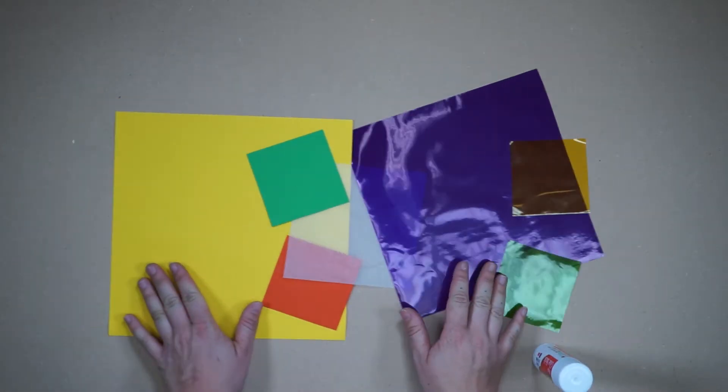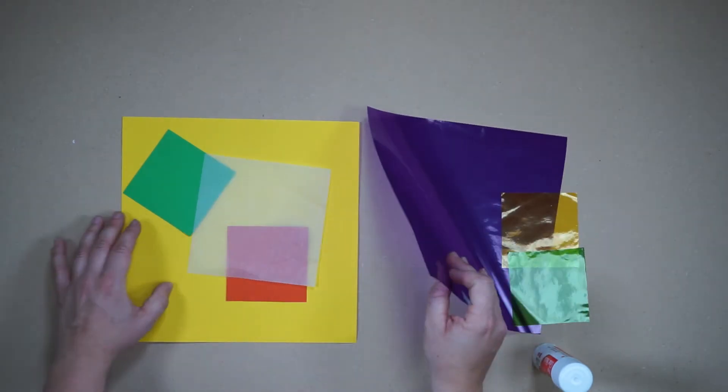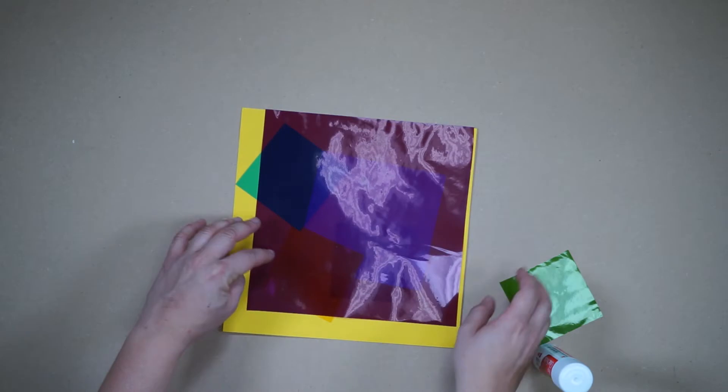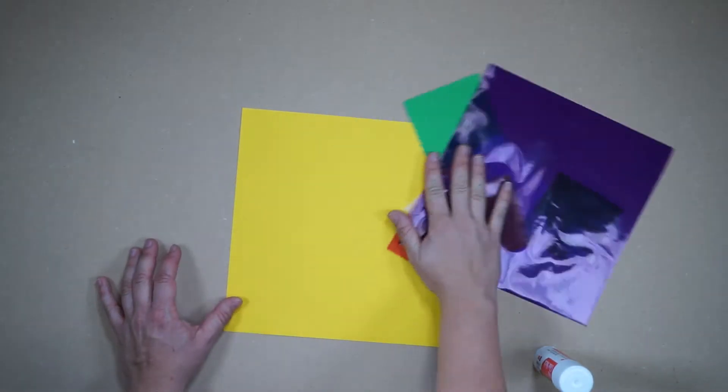Start by layering all of your squares in different ways. See what happens when certain colors mix with other colors. Don't settle for the first idea you come up with. Try a bunch.